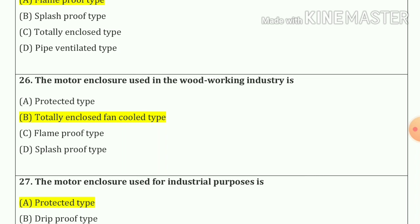Question number twenty-six: The motor enclosure used in the wood working industry is option B — totally enclosed fan cooled type.